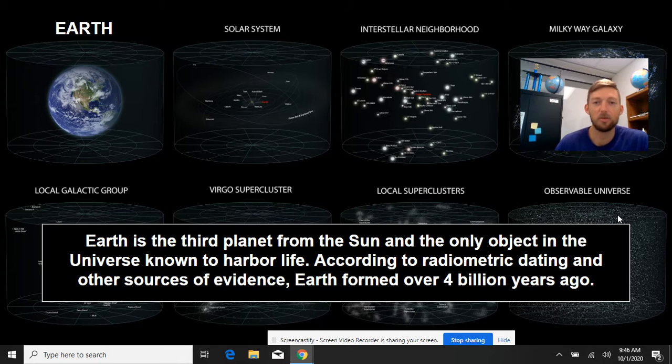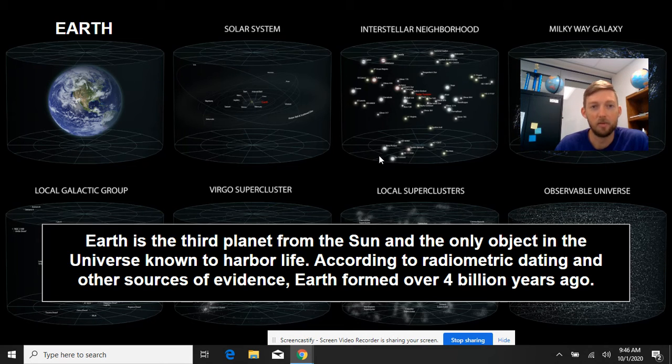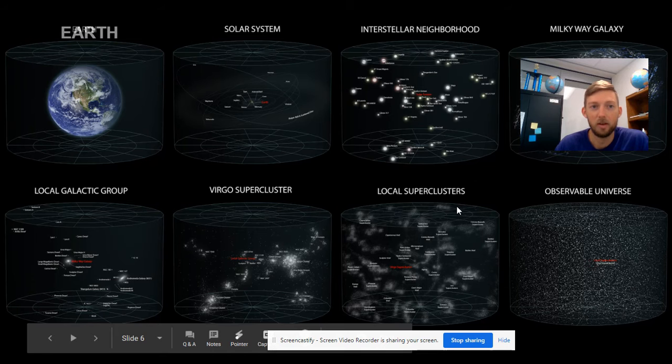Earth is the third planet from the Sun. As you hopefully remember from, my very excellent mother just served us nachos. So my is Mercury, Venus, Earth, Mars, Jupiter, Saturn, Uranus, Neptune. That's how you can remember the planets in order. It's the only object in the universe known to harbor life—in the universe that we've ever seen evidence of life at all. So according to radiometric dating and other sources of evidence, Earth formed over four billion years ago. This planet has been here for a long time. Life has not been around for that long, but when the planet was formed was four billion years ago.